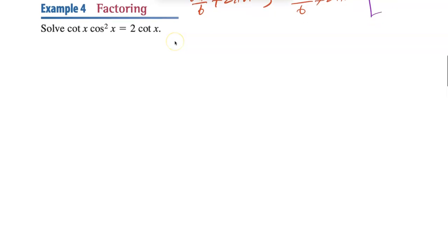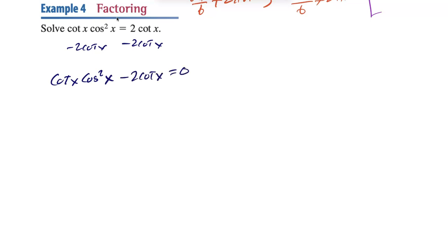Next one: another general solution, and we need to factor this one. First, get everything to one side — subtract 2cotan from both sides. We get cotan(x)·cos²(x) − 2cotan(x) = 0. We can factor out cotan(x), giving cotan(x)(cos²x − 2) = 0.